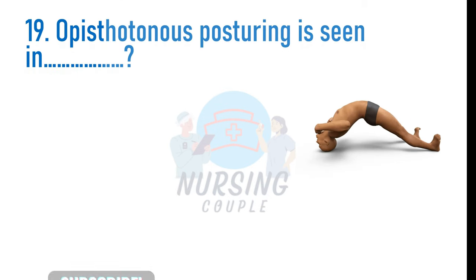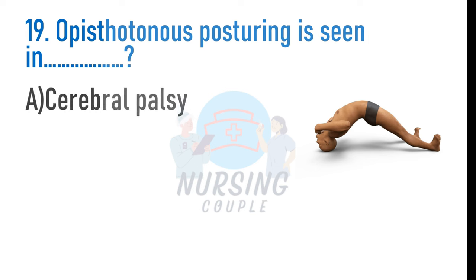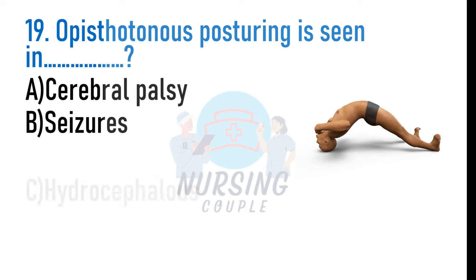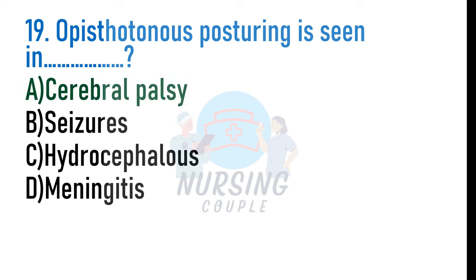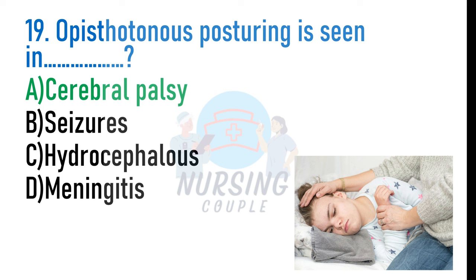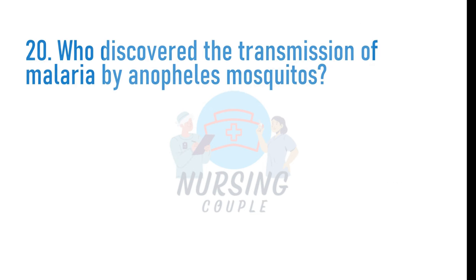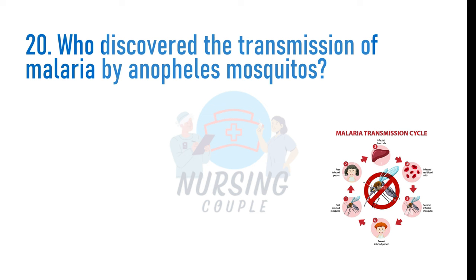Opisthotonus posturing is seen in which condition? A. Cerebral palsy, B. Seizures, C. Hydrocephalus, D. Meningitis. The answer is Option A: Cerebral palsy. Opisthotonus posturing is part of a larger reflex movement set called decerebrate posturing, which includes jaw clenching, rigidly extending legs and arms, toes pointed downward, hyperextension and spasticity in the head, neck, and spinal column leading to backward arching. It is a symptom of severe cerebral palsy and traumatic brain injury.